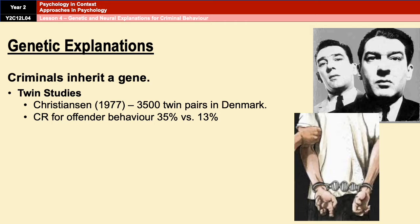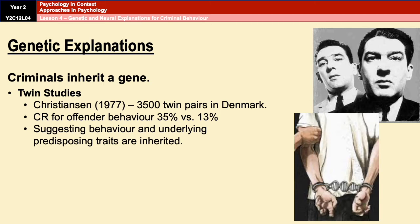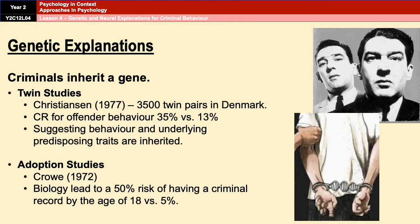That data suggests that both behaviour and underlying traits that predispose people to criminal behaviour could be inherited. Additionally, Crowe in 1972 found that adopted children whose biological mother had a criminal record had a 50% chance of also having a criminal record by the age of 18, whereas adoptees without a criminal mother only had a 5% risk, again showing the impact of genes on offending behaviour.